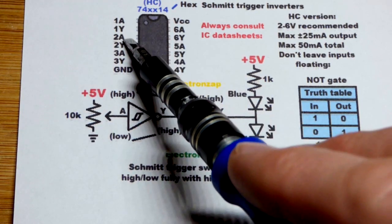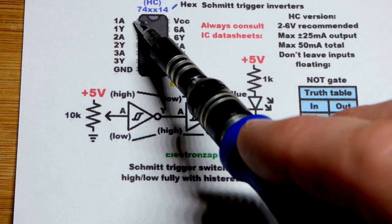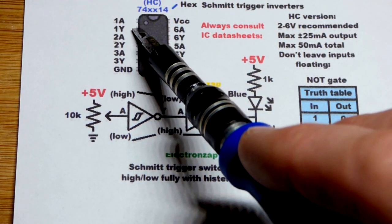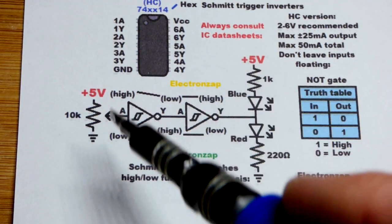We're going to give our signal to 2A, and then 2Y will be the input for 1A, and then 1Y will be our output for the LEDs as you can see here.